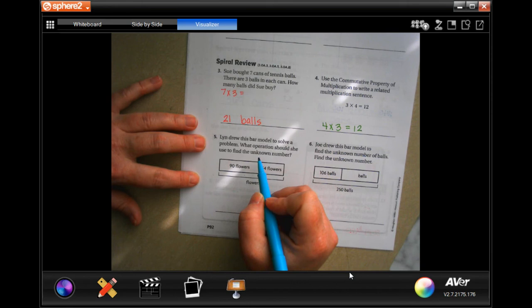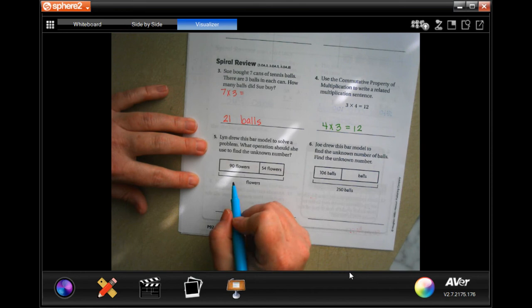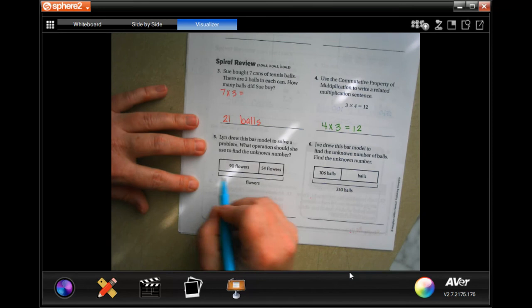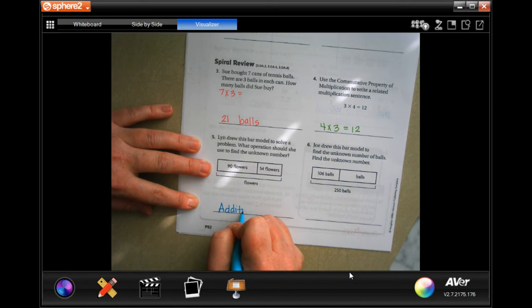Lynn drew this bar model to solve a problem. What operation should be used to find the unknown number? Well, 90 flowers and 54 flowers, well I would just add those together to find out how many in all, so addition.